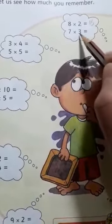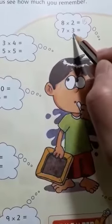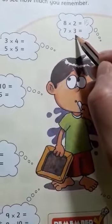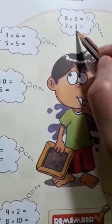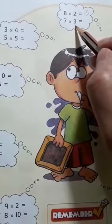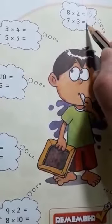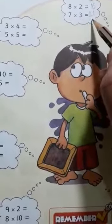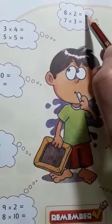Next, 7 times 3. We read 3's table: 3 ones are 3, 3 twos are 6, 3 threes are 9, 3 fours are 12, 3 fives are 15, 3 sixes are 18, 3 sevens are 21. So 7 times 3 equals 21, and 8 times 2 equals 16, 2 times 8 equals 16.